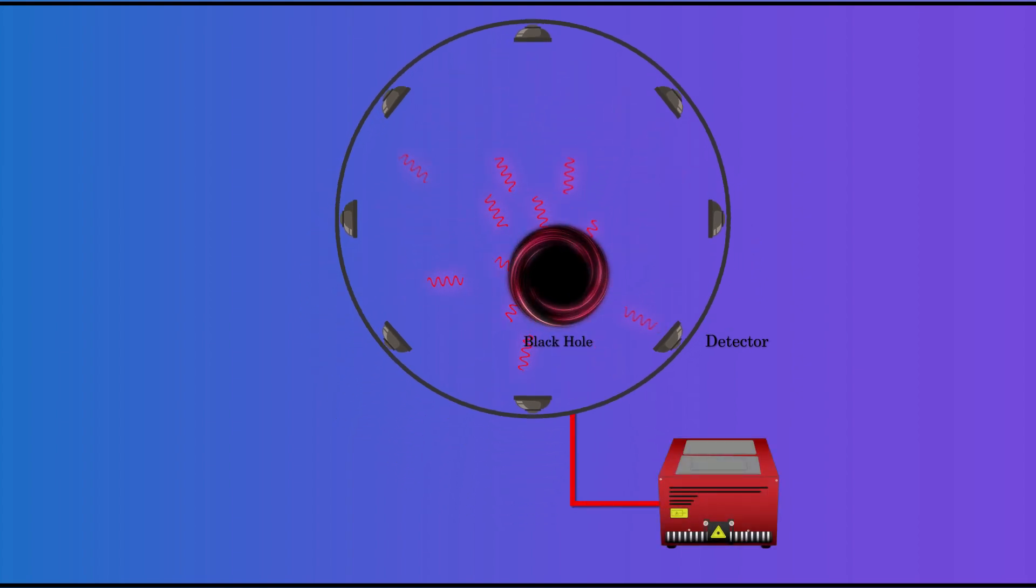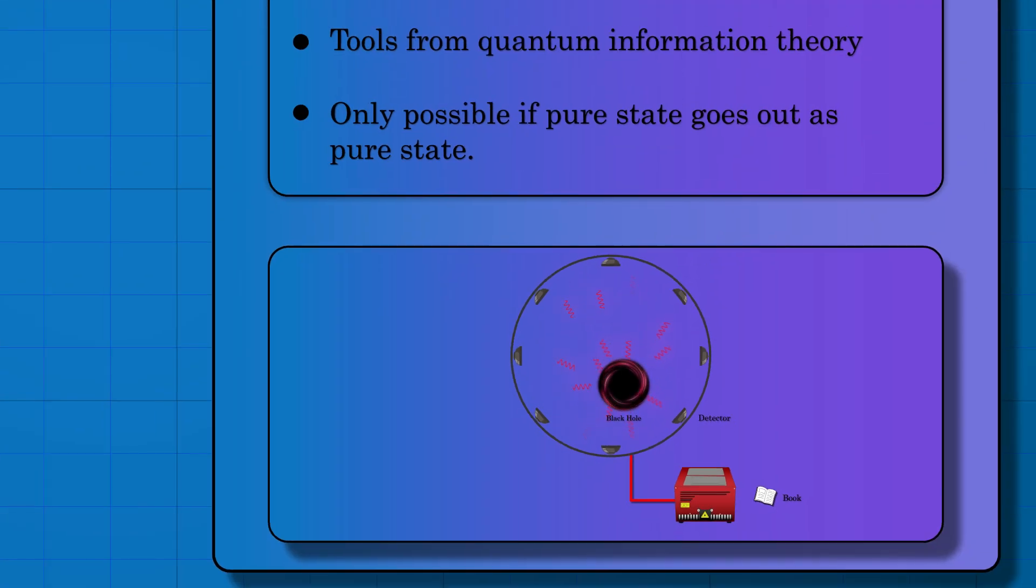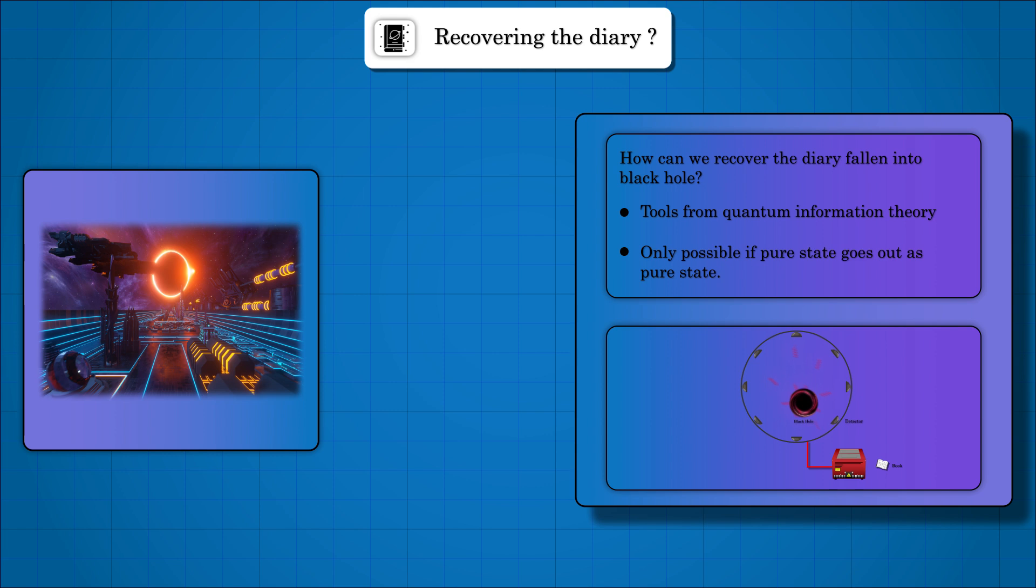Well, Hawking's answer was no. Quantum information theory provides the necessary conditions for Bob's success. It has to do with how the particles in the diary were entangled with each other. For Bob to recover the diary, the Hawking radiation must have a similar entanglement structure.